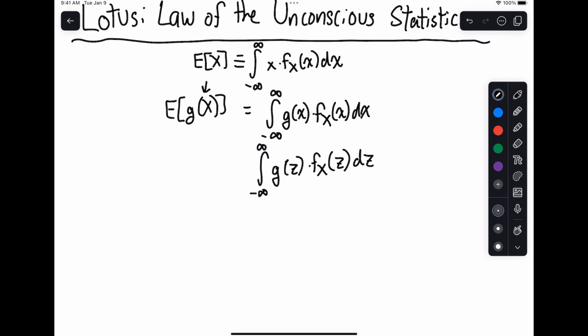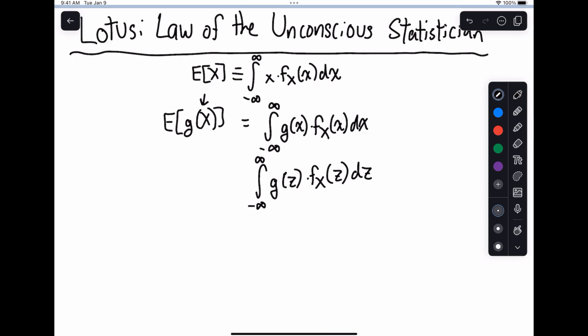So I'll say this is also equal to the integral from minus infinity to infinity of g of z times fx of our variable z dz, which we're integrating out. So that's pretty much all you have to do is just substituting the function. That's why it's called Law of the Unconscious Statistician, because the really straightforward or unconscious thing that you would expect to do actually ends up working.